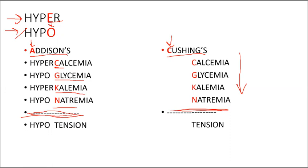And then you go back to Cushing's again. With Cushing's, we're going to go the other way around and we're going to start with hypo. So we're going to see hypocalcemia, hyperglycemia, hypokalemia, hypernatremia.